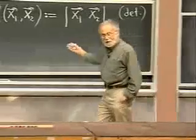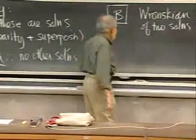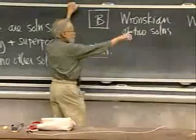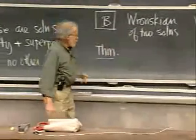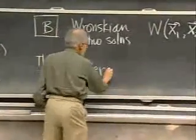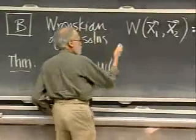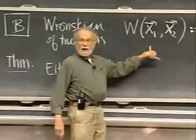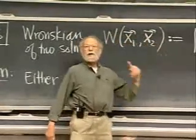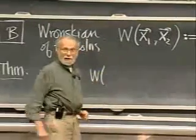That is just the definition. There is a theorem, and the theorem is going to look just like the one we had for second-order equations. If these are two solutions, there are only two possibilities for the Wronskian. The Wronskian is a function of t, after you have calculated out that determinant.